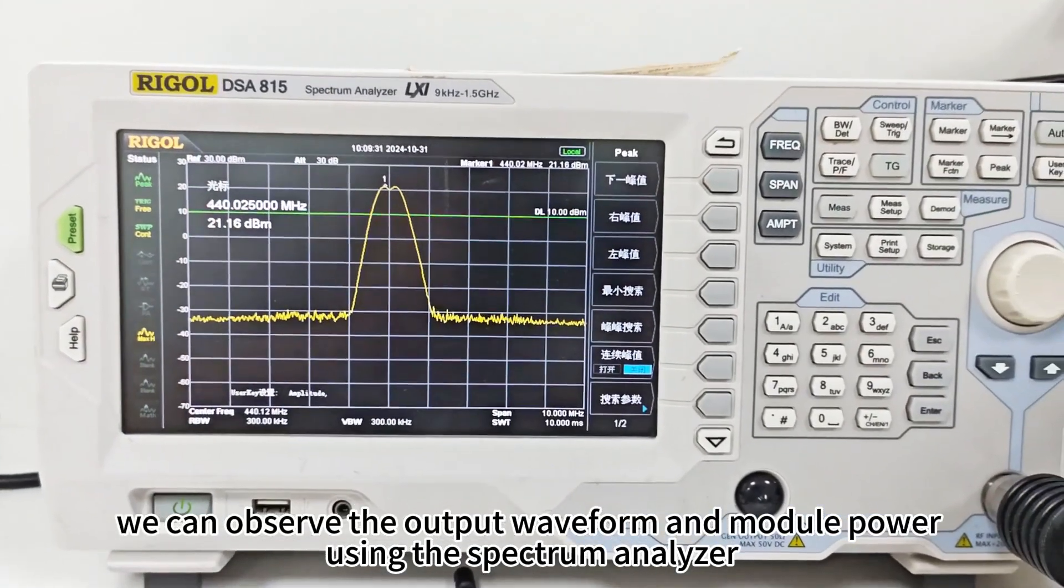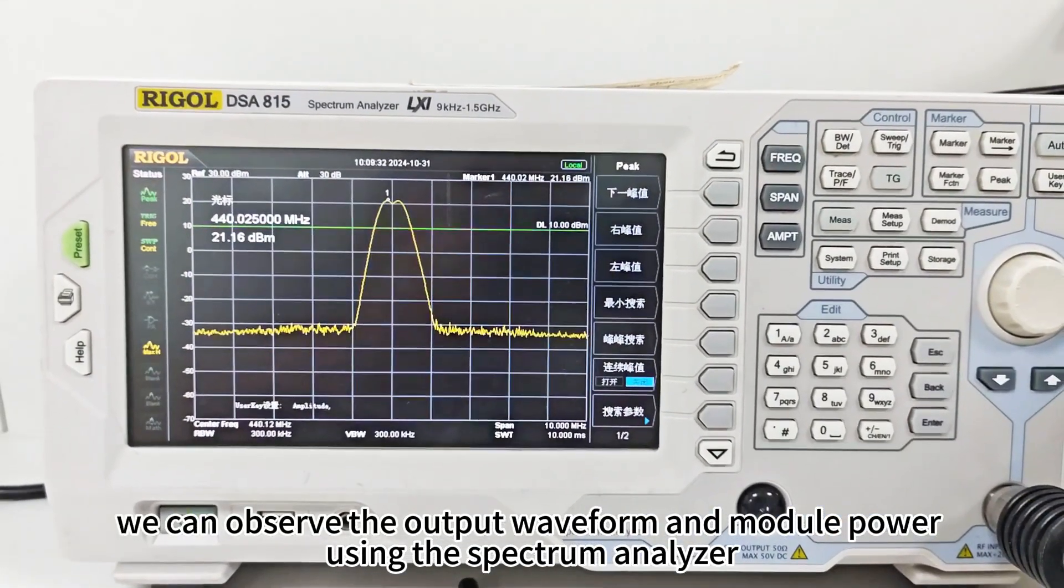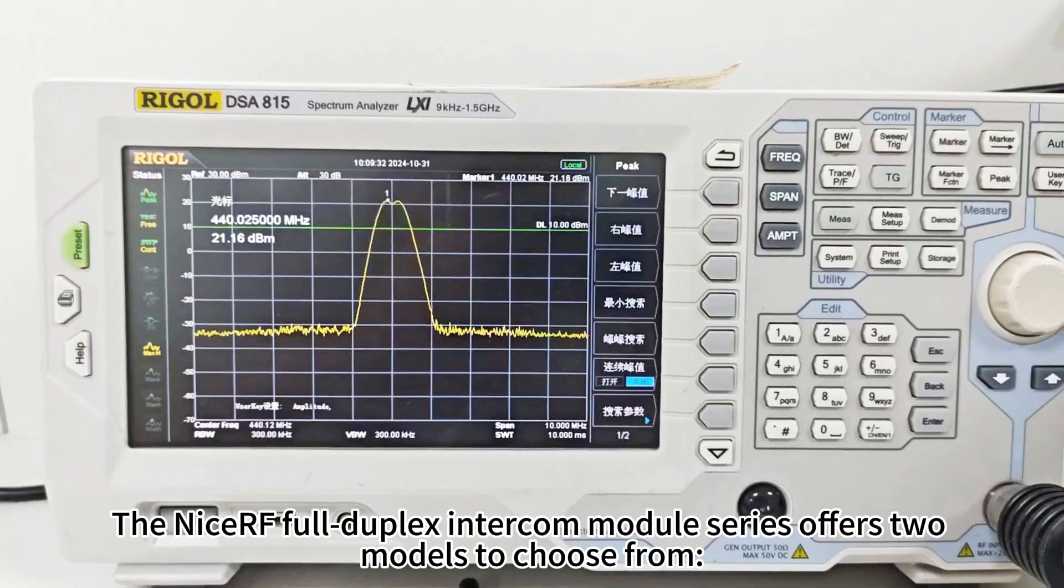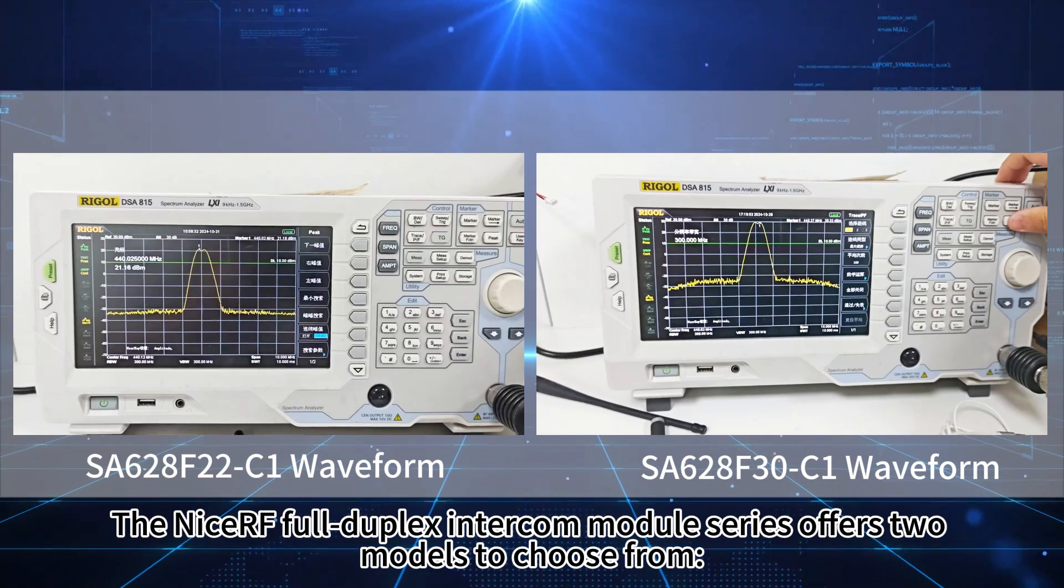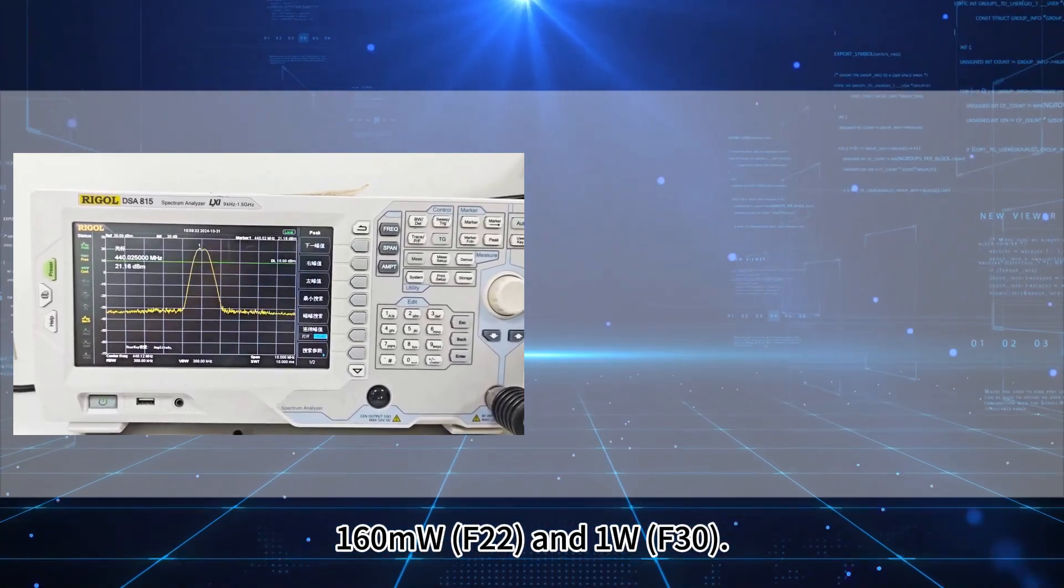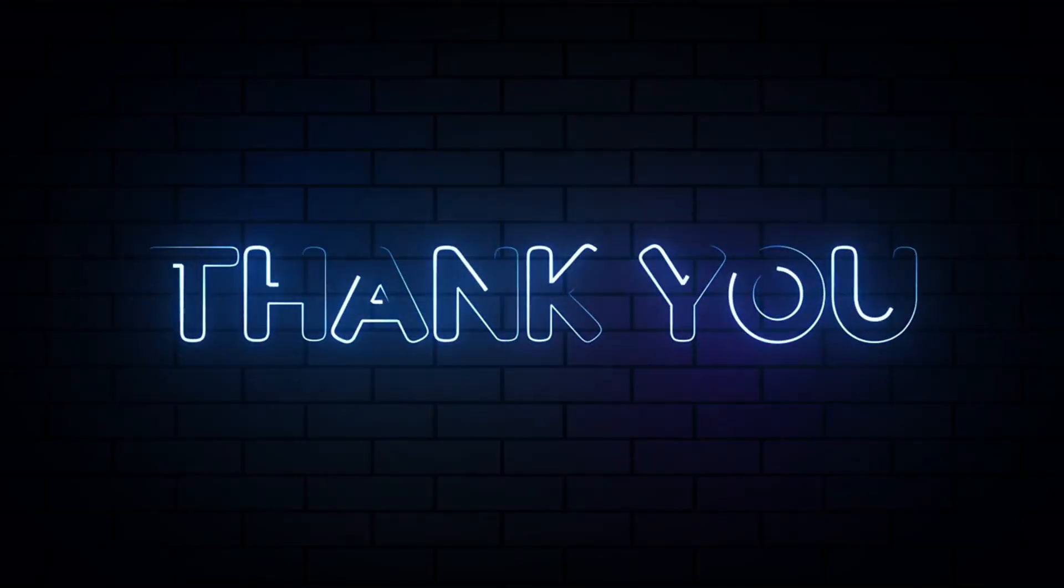Finally, we can observe the output waveform and module power using the spectrum analyzer. The NICE-RF full duplex intercom module series offers two models to choose from, 160 milliwatts F22 and 1 watt F30. Thank you for watching.